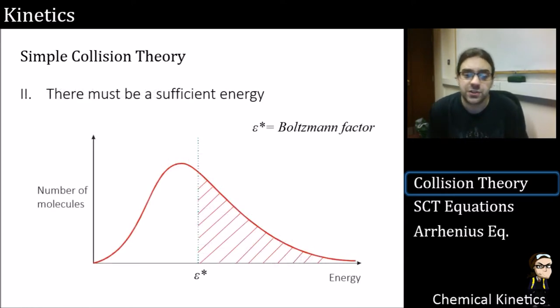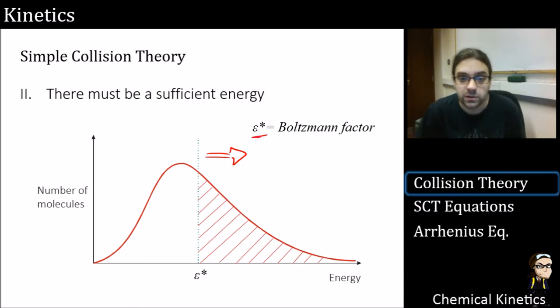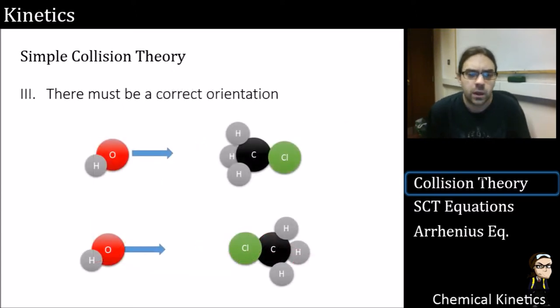The second part from collision theory: there must be sufficient energy. So what we need to do is ask how many molecules have the right energy. If they collide, are they going to hit each other head on and with enough energy to get over the activation barrier or not? So we have this Boltzmann factor, which is the number of molecules that are higher than a particular energy. I'm not going to go into the equation of how we derive that - it's a little bit of integration. We need to figure out how many molecules does that part of the graph represent.